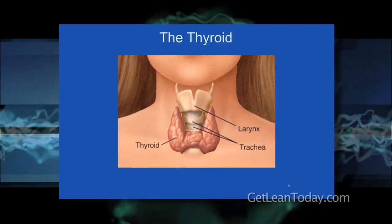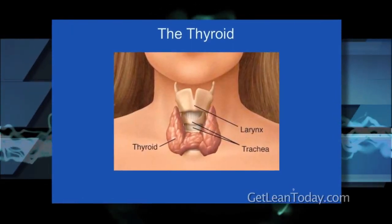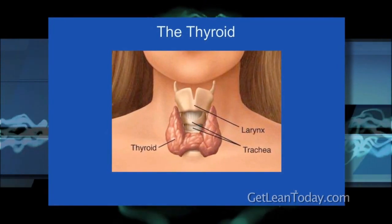TGA is very similar to TPO antibodies that we mentioned in the last lesson. TGA is a protein that is in the thyroid gland, and your immune system has targeted this as a foreign object. So this is an autoimmune problem, which means that your immune system is attacking your thyroid gland.